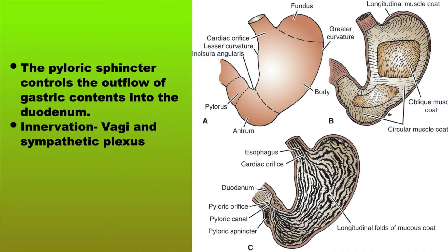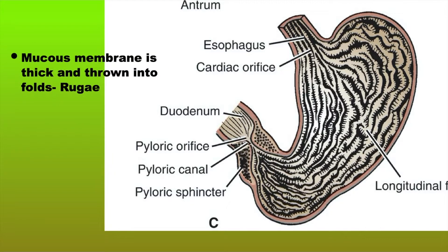The pyloric sphincter controls the outflow of gastric contents into the duodenum. It has an innervation from the vagus and the sympathetic plexus. The mucous membrane of the stomach is thick and is thrown into folds called rugae.